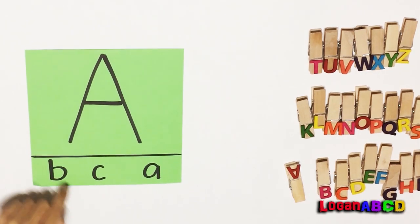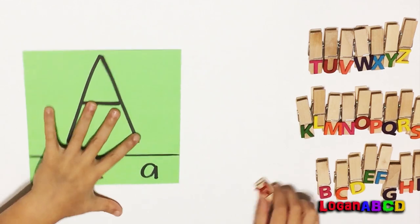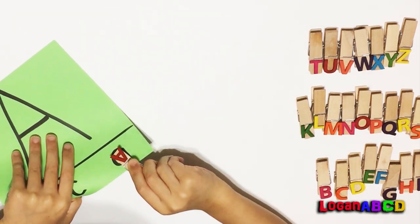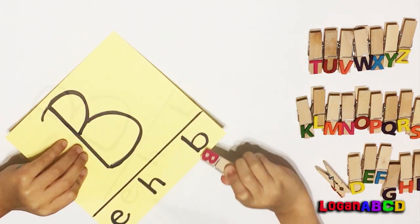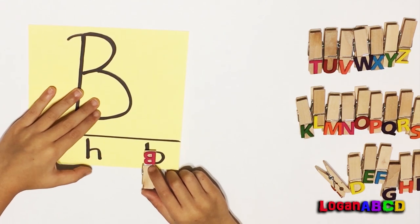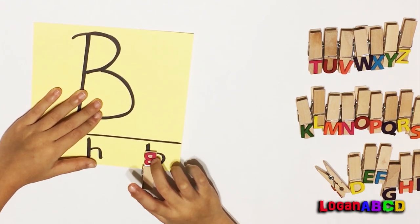It's A, B, C, or A. The letter A. The letter B. B for bat.